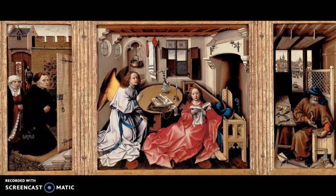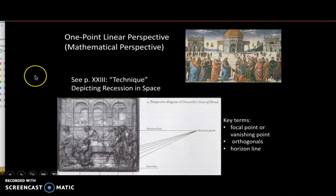Brunelleschi figures out a way for everyone to fix that. What he figures out is based very much on the idea of the braccia, the repeated standardized unit that he had developed at San Lorenzo. Here is a diagram mapping out the perspective system on a relief panel made by Brunelleschi's friend, Donatello.